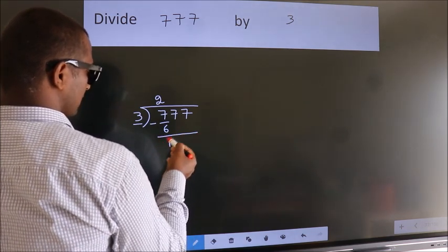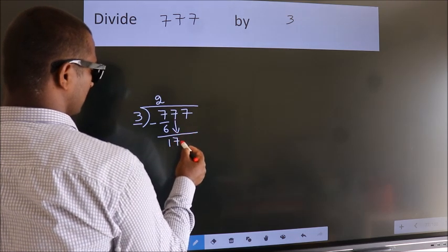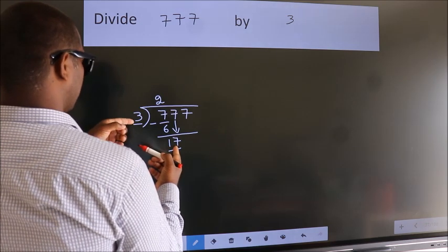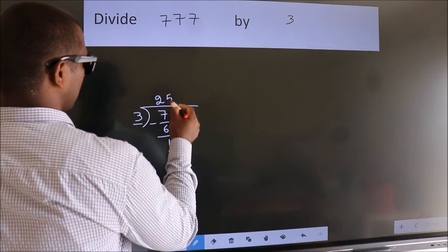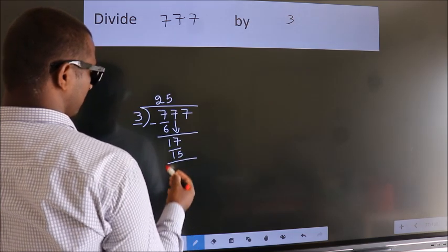After this, bring down the beside number. So 7 down. So 17. A number close to 17 in the 3 table is 3 times 5 is 15. Now we subtract.